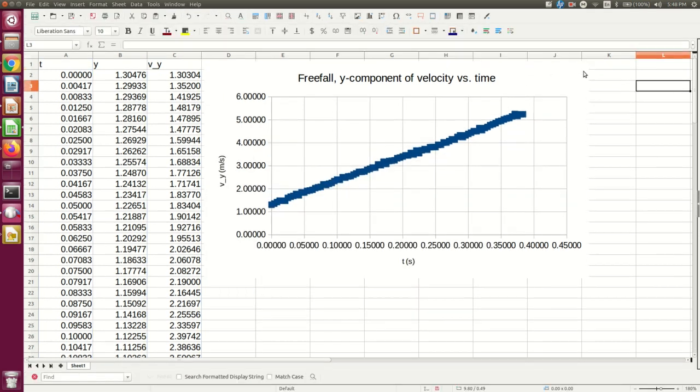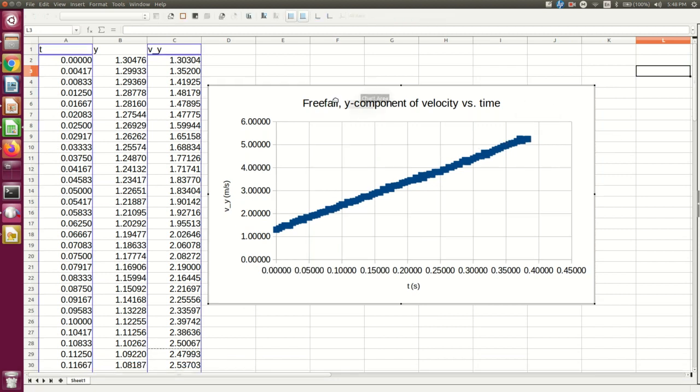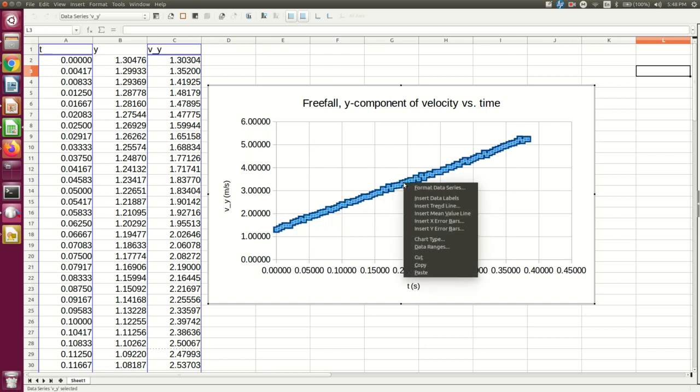Okay, so I've inserted the graph and I am now going to double-click so that I'm in the graph and can do things with it. I'm going to select the data and I'm going to right-click and insert trend line.